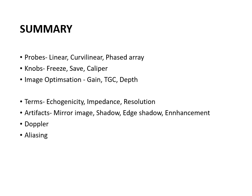To summarize: we have covered three commonly used probes — the linear probe with highest frequency for superficial structures, and the curvilinear and phased array probes with lower frequency for deeper structures. We have covered key knobs: freeze, save, and caliper. For image optimization: gain amplifies all returning signals; TGC — time gain compensation — selectively amplifies signals from chosen depths, whether superficial, middle, or deep; and depth allows you to direct sound waves to the required depth.